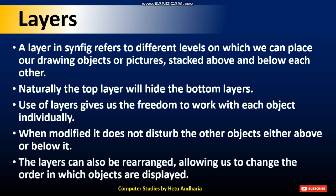The layers can also be rearranged, allowing us to change the order in which the objects are displayed, thus changing the appearance of our scene. For example, suppose you have three shapes — circle, star, and square. First you draw a circle, then the star hides the part of the circle where it overlaps, then the square hides both the star and the circle. Changing the order means you can bring the circle to the top and put the star behind it. That is known as changing the order.